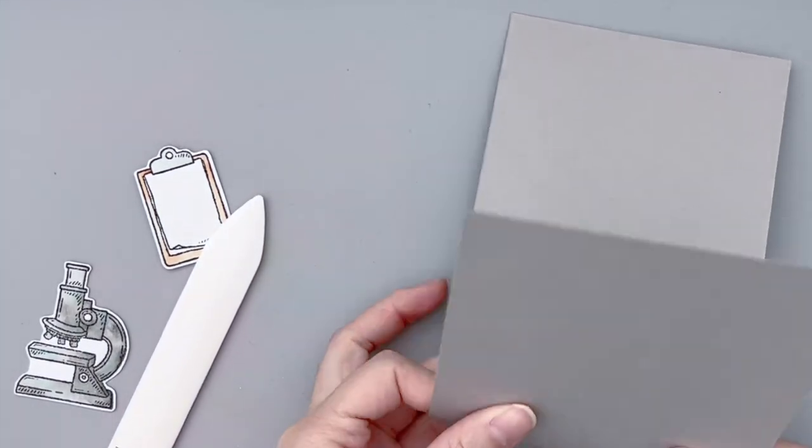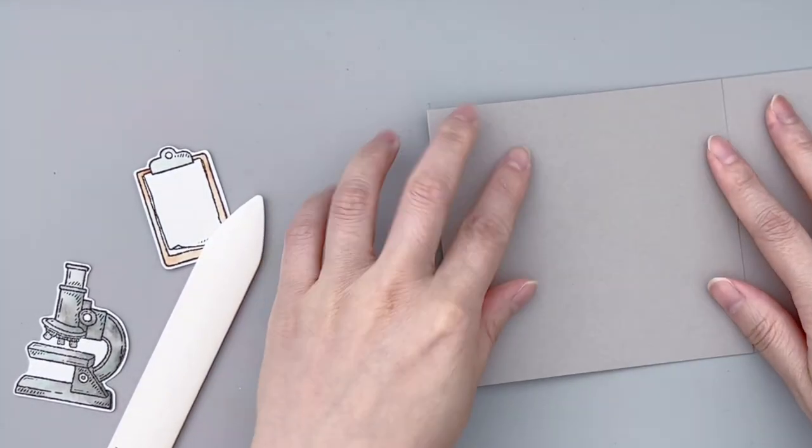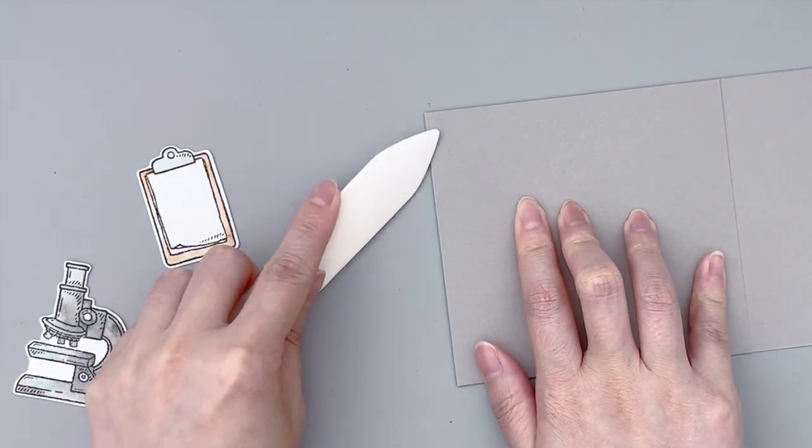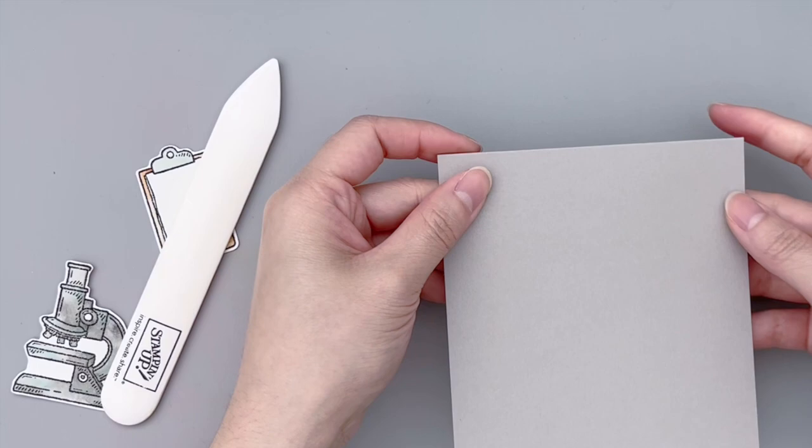Now what you need to do for the actual mechanism is super simple. You just have to fold along the score lines to create kind of a flap in the middle. And that's it. It's really that easy.